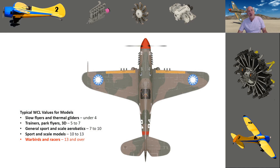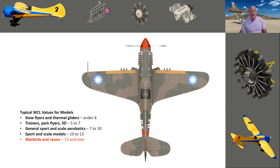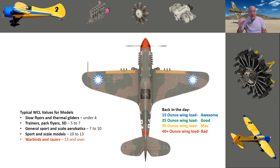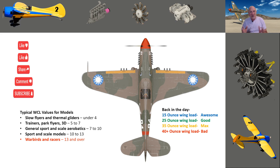Cubed wing loading was invented by people a lot smarter than me as a way for a modeler to understand the flight characteristics of a given airplane with a given wing size and weight. From what I understand, the only reason it was invented was for us RC modelers to understand the characteristics of our airplanes — and why big airplanes fly completely different than small airplanes with the same given wing load. Back in the day we had 15, 25, 35, and 40 ounces as a way to measure how a plane might behave, but for me this didn't necessarily work with all the different types of planes I was flying.